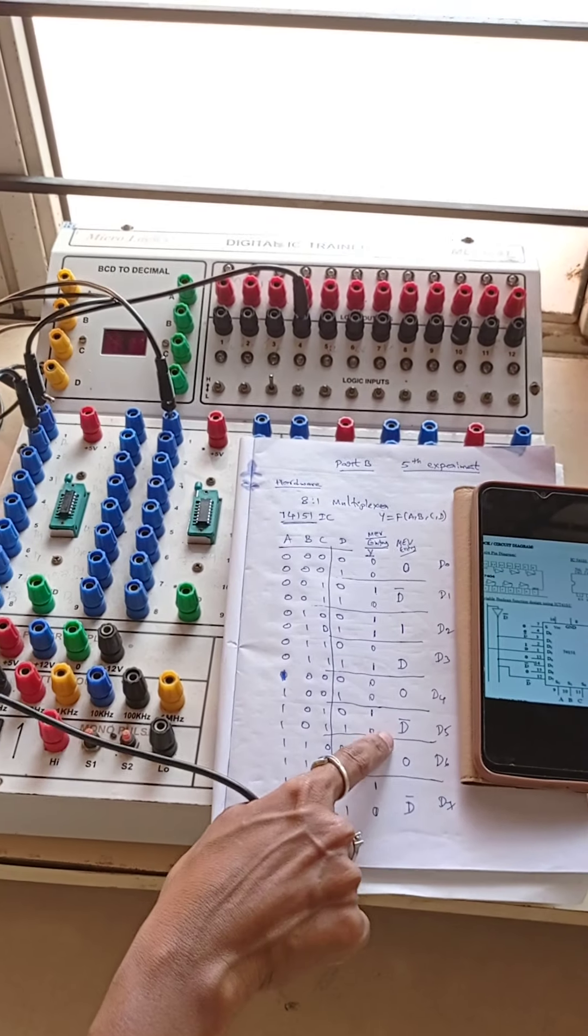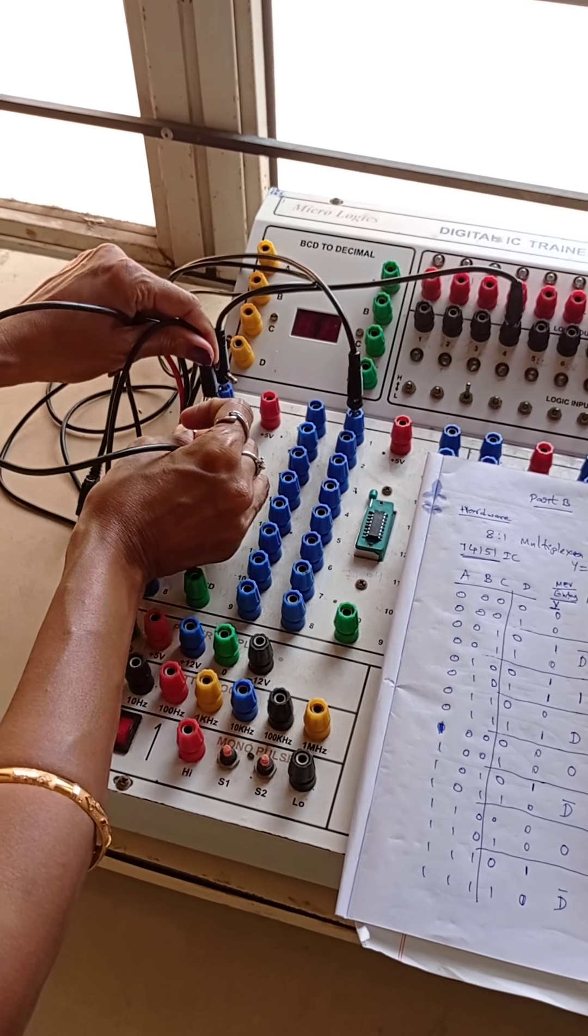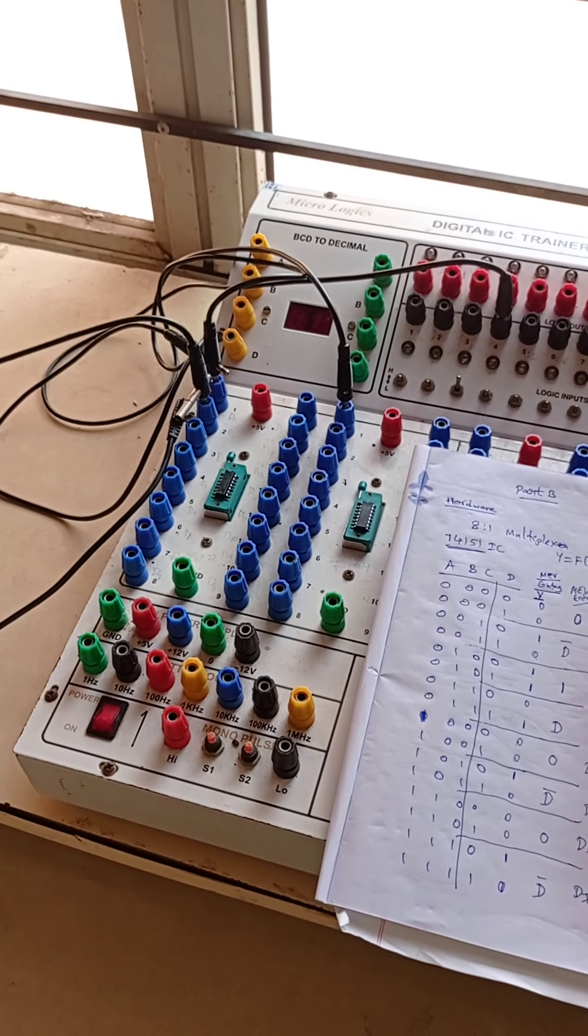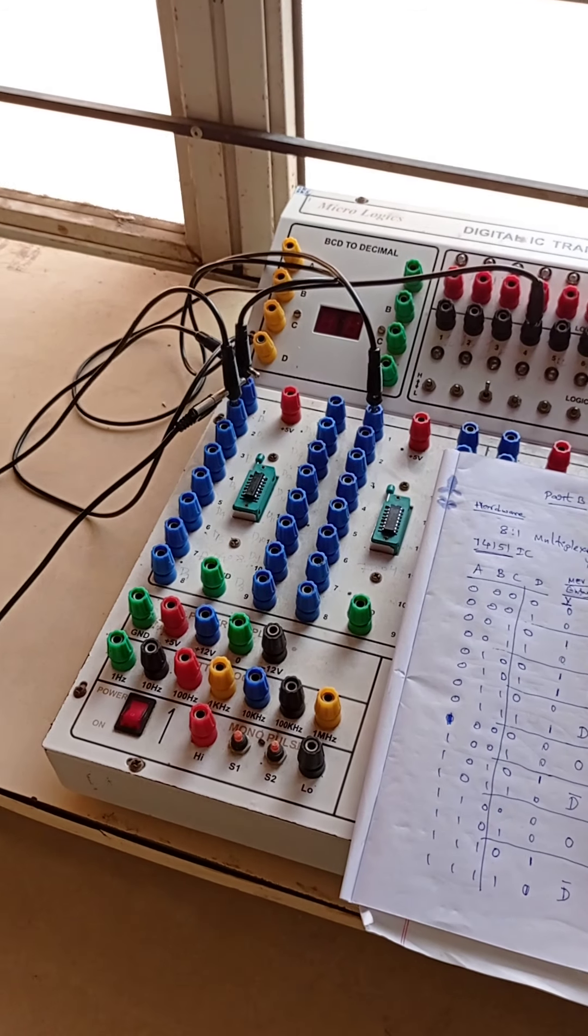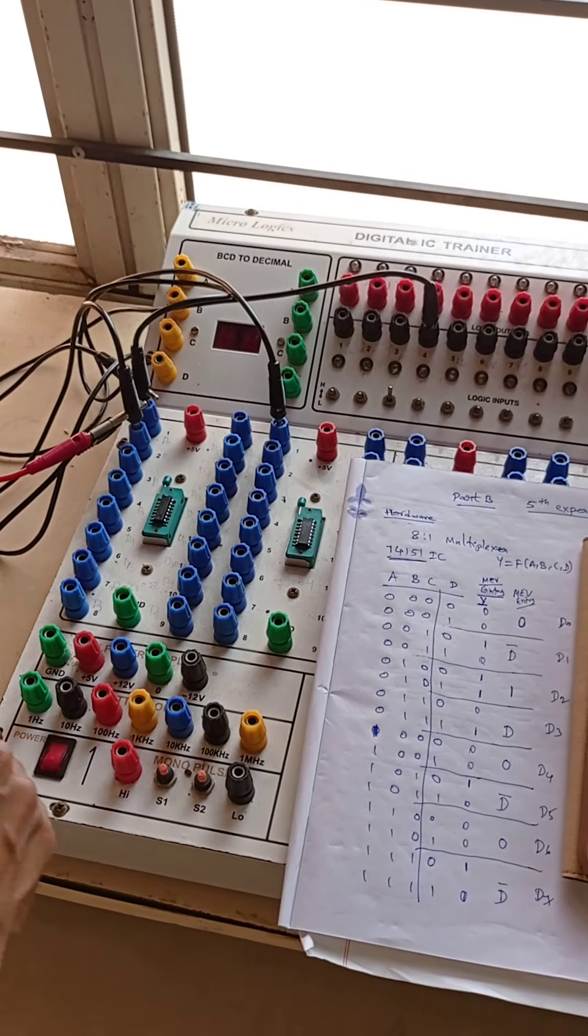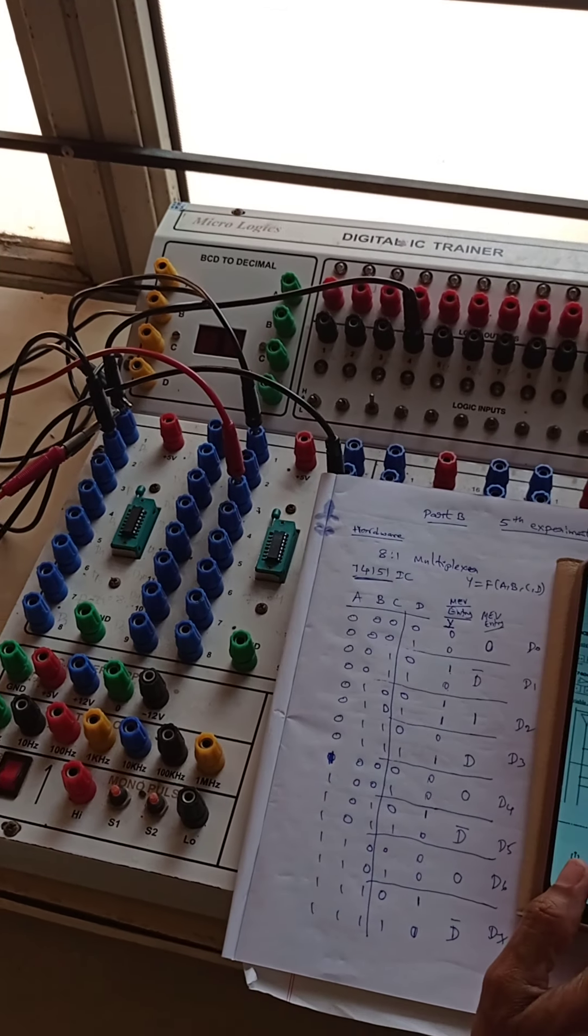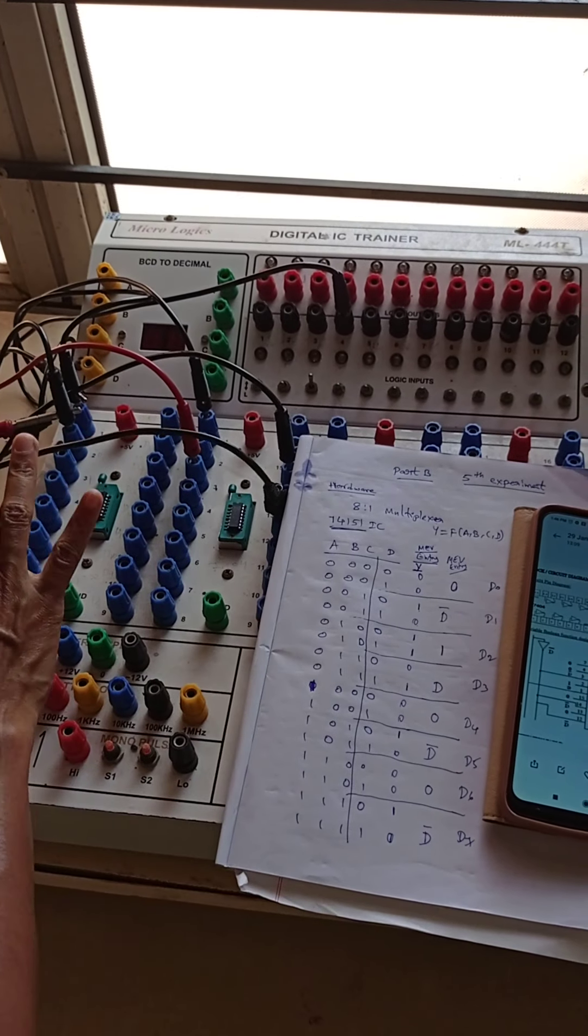Next coming to D bar, that is inverted output, taking from NOT gate. D1, D5 as well D7, so tap 3 connections and connect for pin number 3, pin number 14, and pin number 12. So D, D bar is connected.